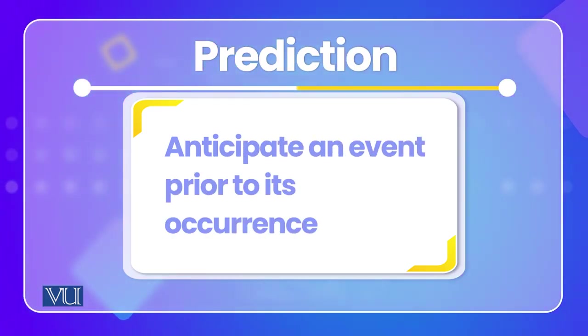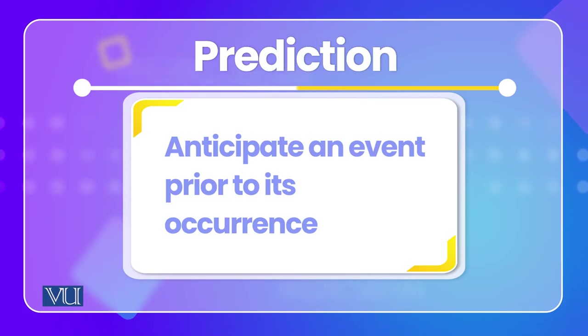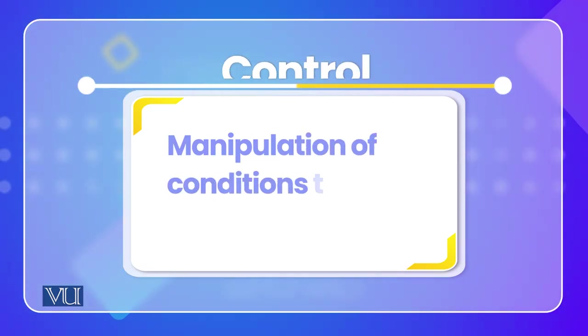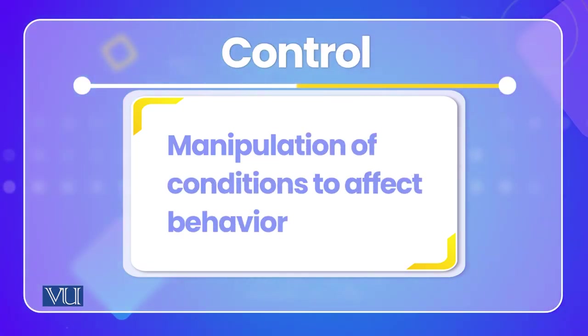Prediction means: if something happens, then we can predict that when it happens, a certain result will follow. We can predict that when one thing happens and another happens, a certain outcome results from that.